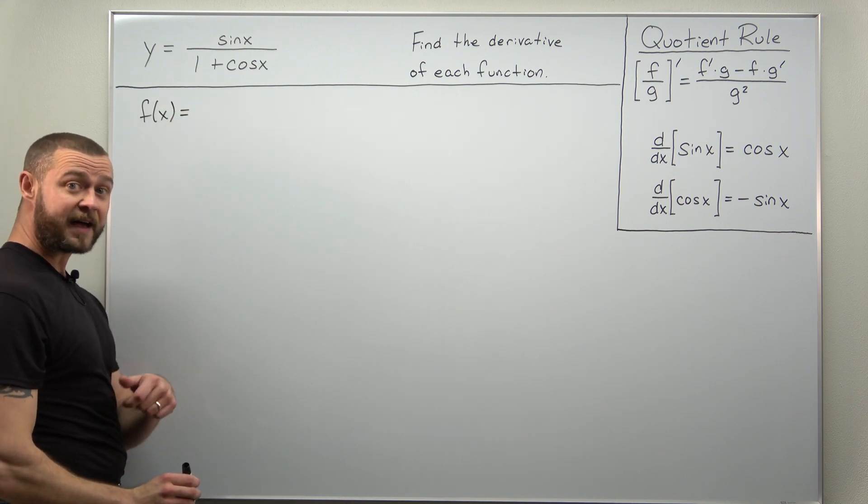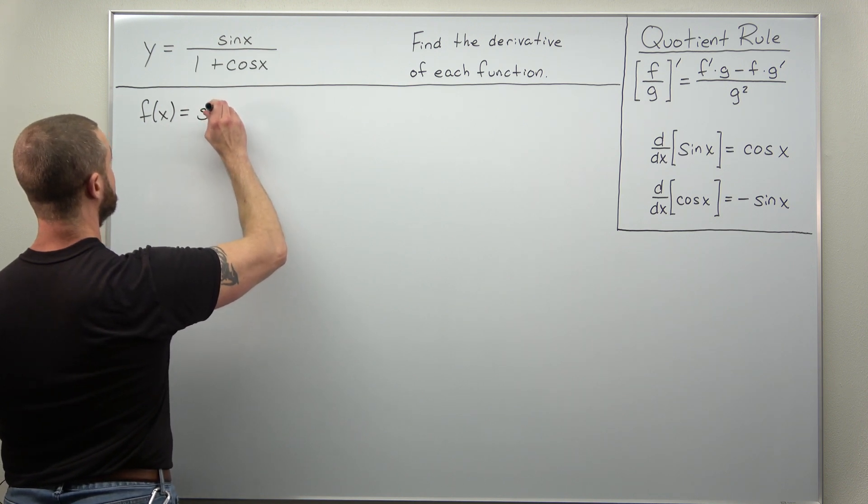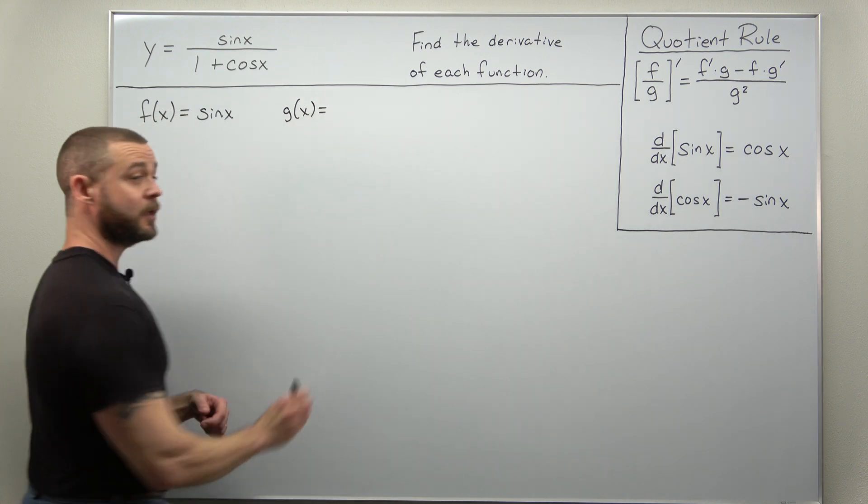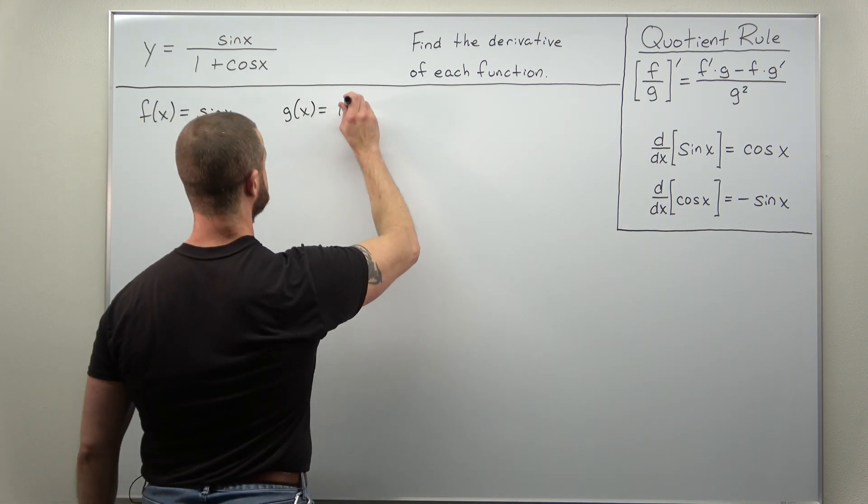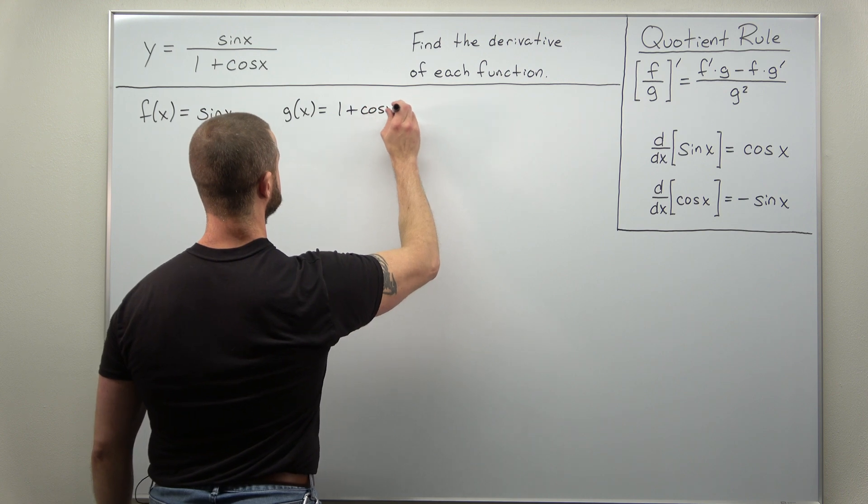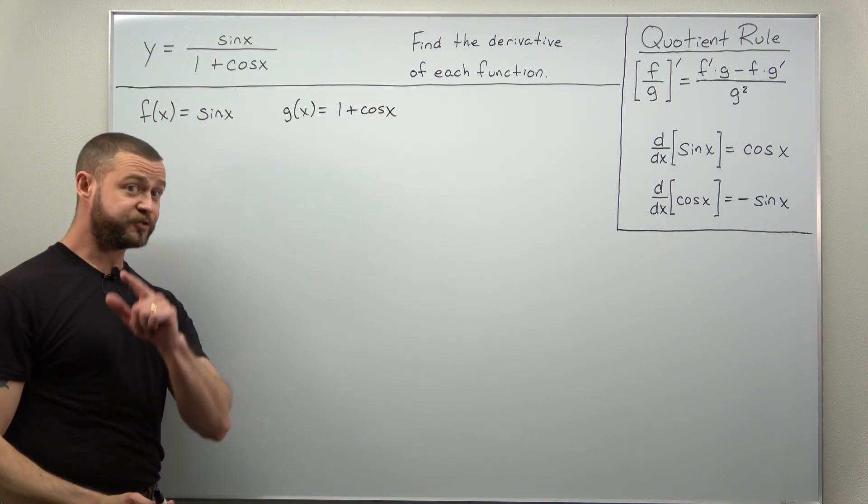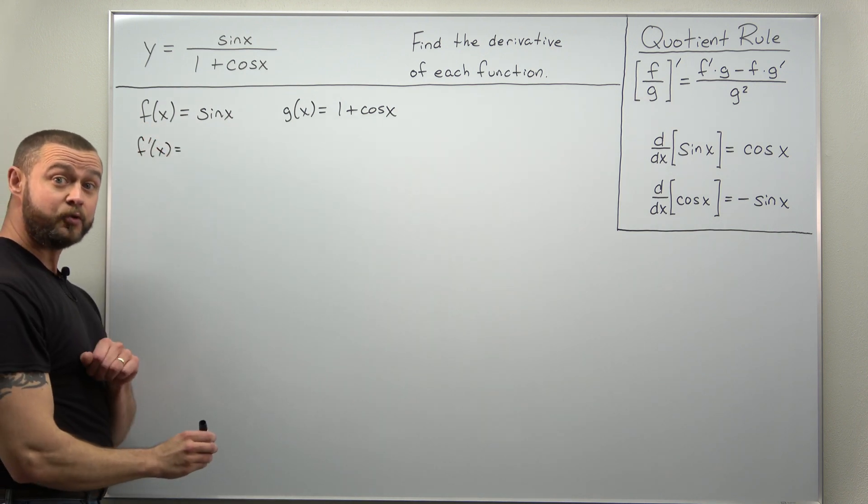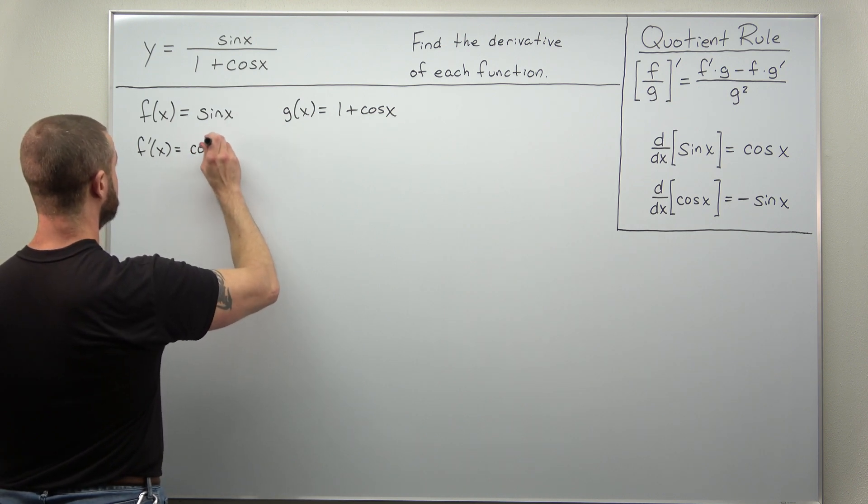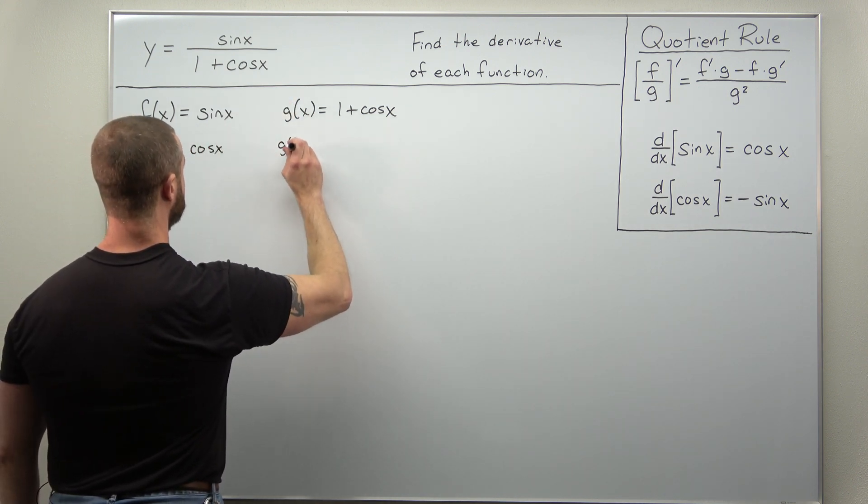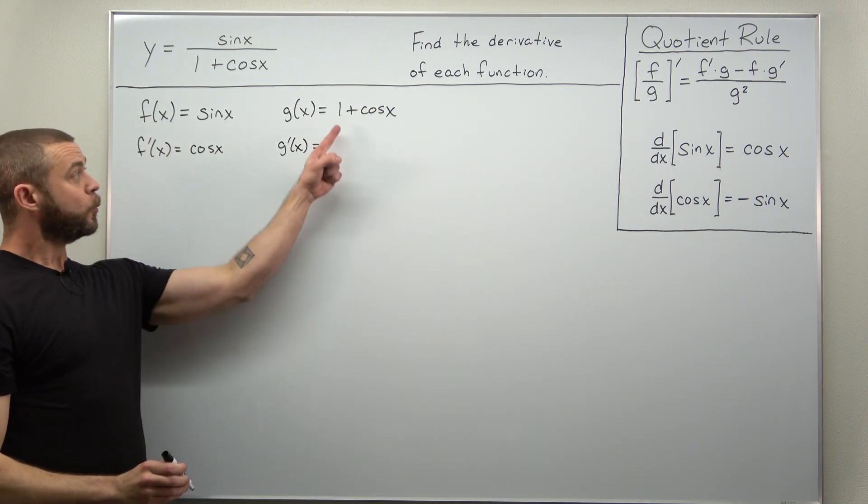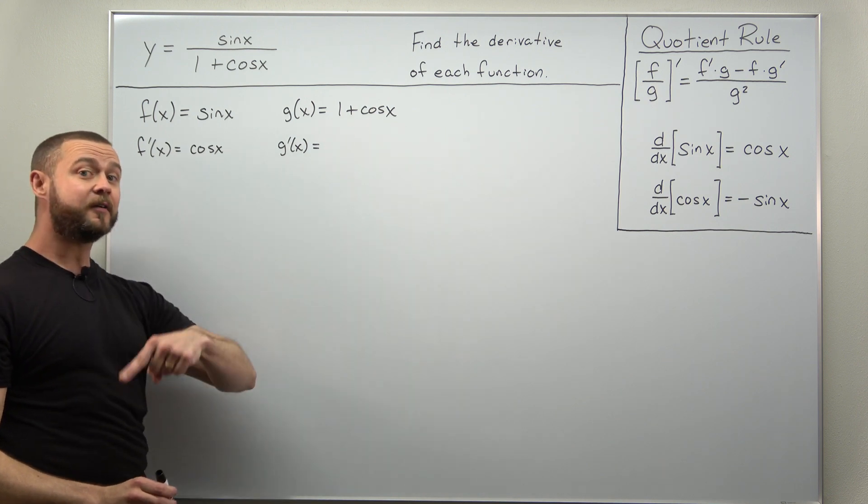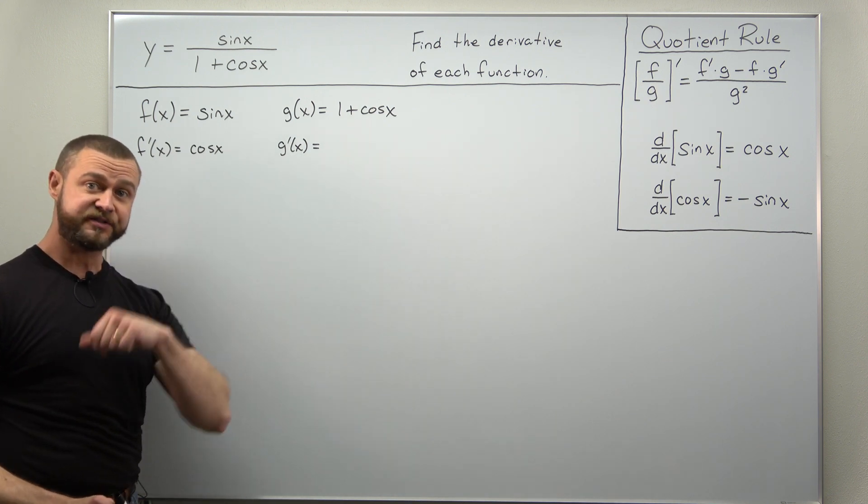So identify the numerator f of x as sine of x and the denominator g of x as 1 plus cosine of x. The derivatives are straightforward here. f prime the derivative of sine that comes out to cosine and g prime. Just be careful with that. 1 is a constant that differentiates to 0 and the derivative of cosine of x is negative sine of x.